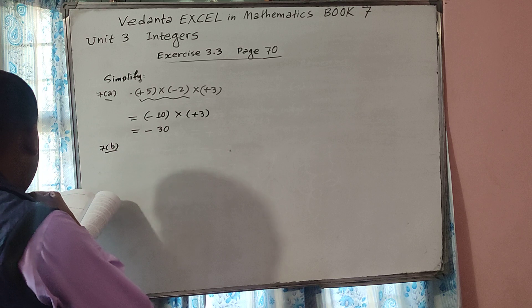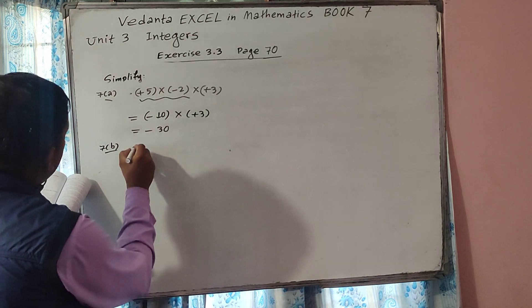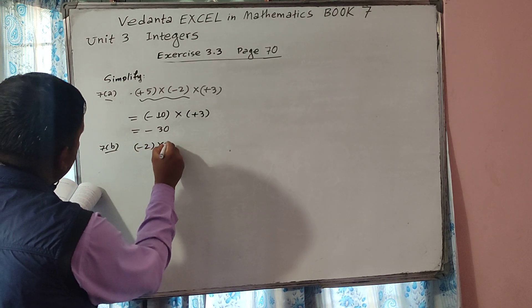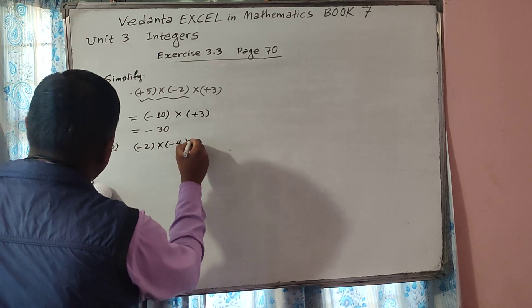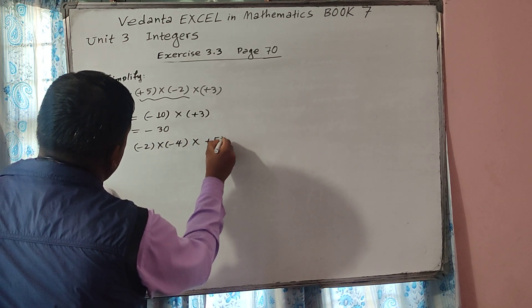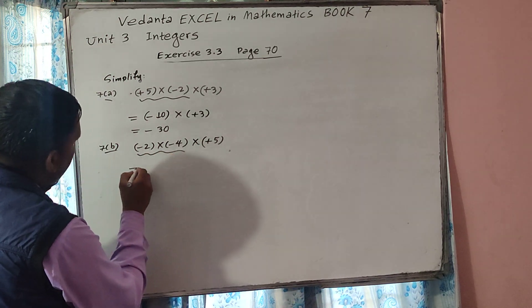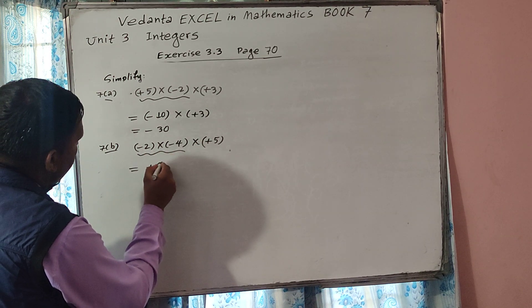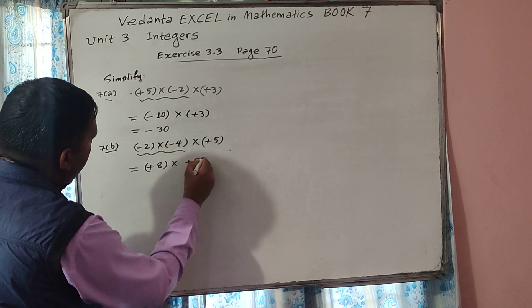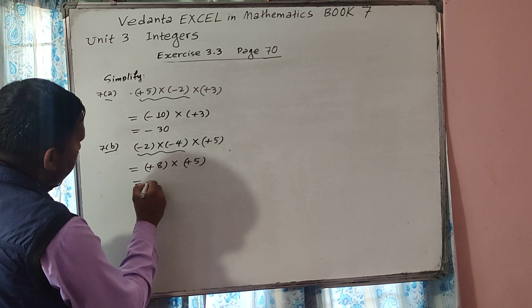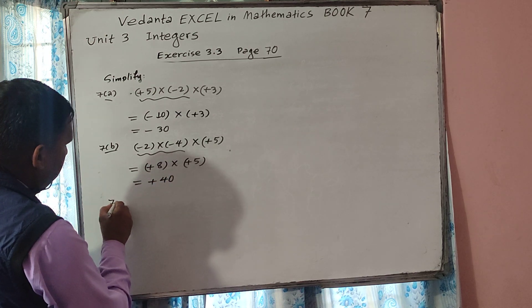Now 7B: minus 2 into minus 4 into plus 5. Look at the first and second numbers — minus into minus gives plus, so 2 times 4 is 8, giving plus 8. Then plus 8 into plus 5 — plus into plus gives plus, so 8 times 5 is 40. Plus 40 is the answer.